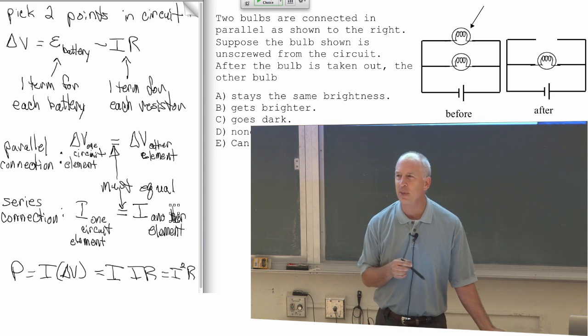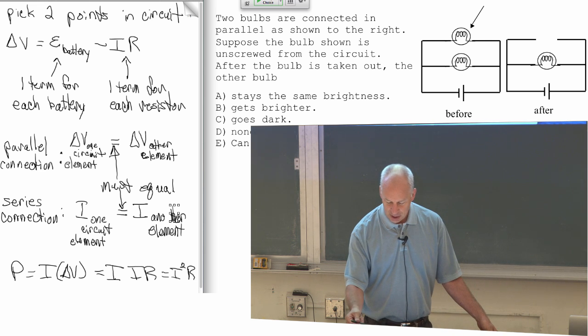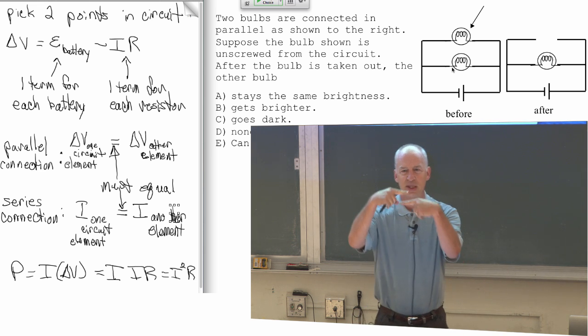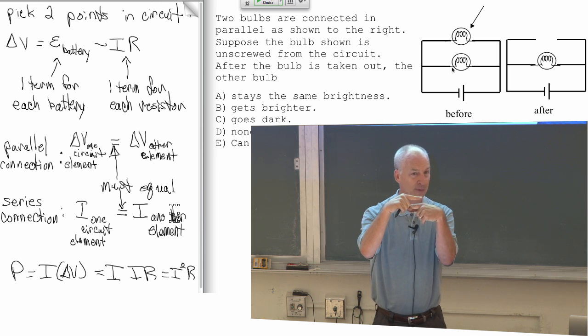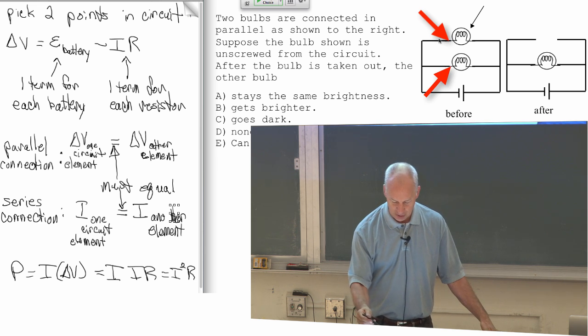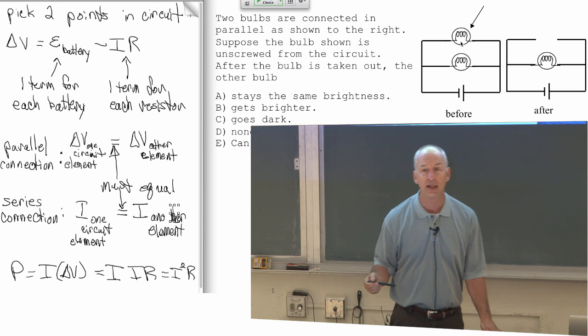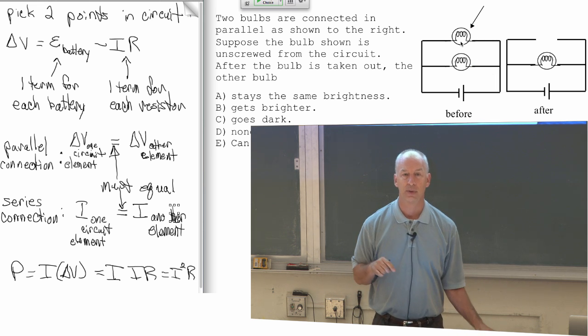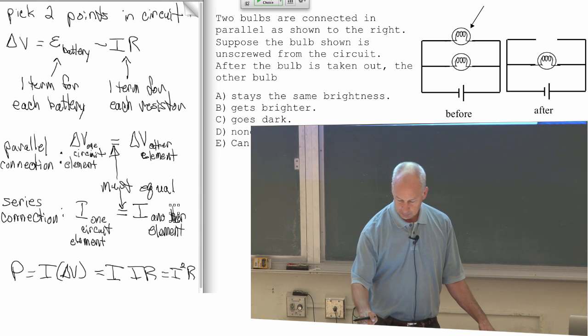Any questions about this? What a parallel connection means? It doesn't mean that these two objects, that these two sets of wires are parallel to each other. It doesn't mean that. It means that one side of this one is connected by a bare wire, and the other side of this one is connected by a bare wire to this one. So that means they're connected to each other by wires.